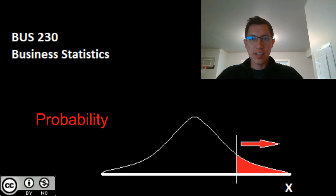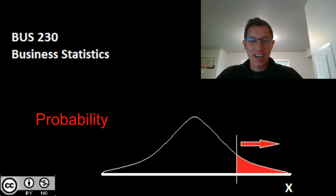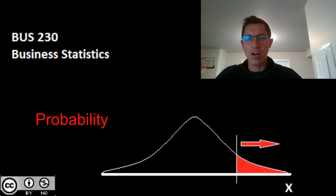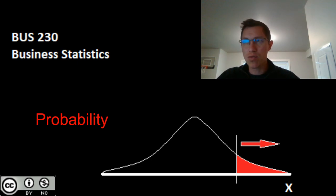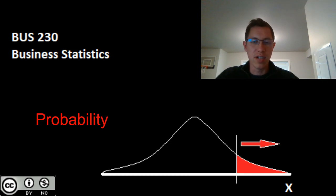To start off today's video, have you guys heard the latest statistics joke? We probably have. What we're going to be taking a look at today is probability. In the next two videos, we'll start off with our initial definitions and some basic counting rules. In the next video on probability, we will take a look at probability itself and a bunch of different ways we can calculate and utilize probability. Let's try to keep the puns aside the best we can.